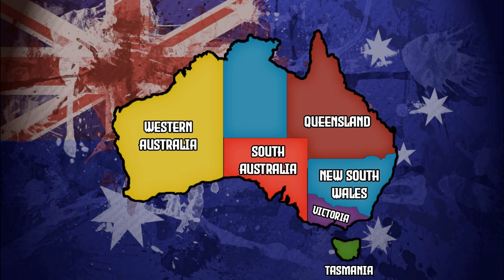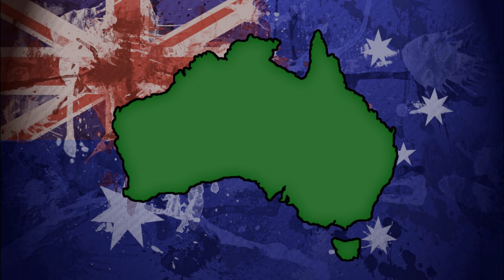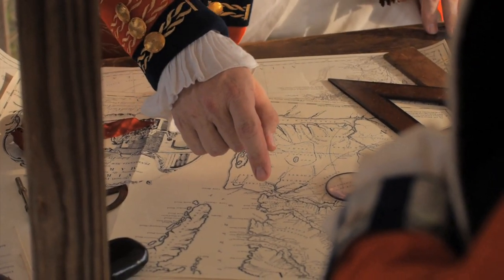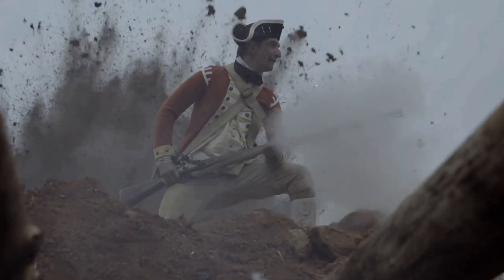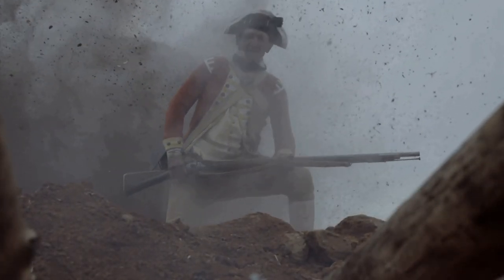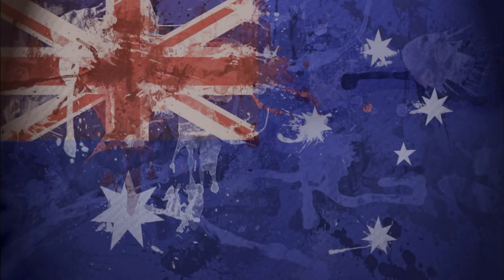In 1900, a country the size of a continent simply just came into existence. What started as a set of British colonies designed to punish its criminals, this new country, Australia, now stood with a landmass 32 times that of its mother country. But unlike the USA, there was no war of independence, and no common enemy for these independent colonies to rally around. They simply agreed to federate.